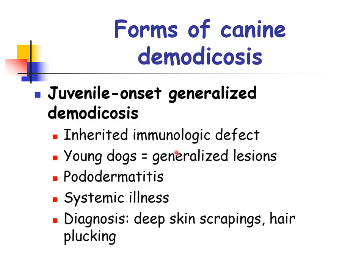Juvenile onset generalized demodicosis results from an inherited immunologic defect with functional abnormality associated with cell-mediated immunity. It is considered to be a severe disease of young dogs with generalized lesions including erythema, papules, alopecia, oily seborrhea, edema, hyperpigmentation, and crusts. There is also accompanying pododermatitis. Dogs can have systemic illness with generalized lymphadenopathy, lethargy, and fever when deep pyoderma, furunculosis, or cellulitis is seen. Diagnosis includes deep skin scrapings and hair plucking, typically revealing mites, eggs, and larval forms in high numbers.